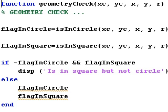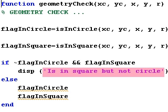But we've also modified this so it's no longer a script but a function. A function is a way of adding to the MATLAB language. So just like there is a sine function, now there is a geometry check function that will take these 5 inputs and display a string if it is in the square but not in the circle.